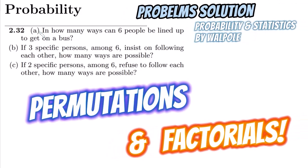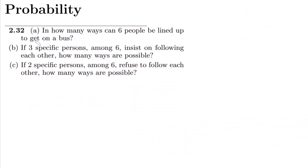Welcome back guys, I hope all of you are fine. This is question 2.32 of our book written by Walpole. In this question, Part A asks: in how many ways can six people be lined up to get on a bus? So we have six people and in order to ride a bus they have to line up — what are the different ways of lining up?